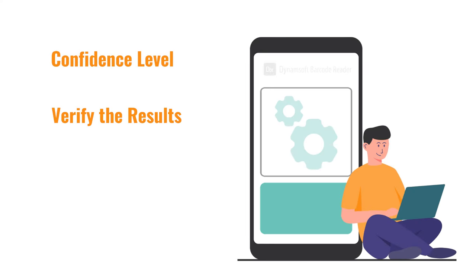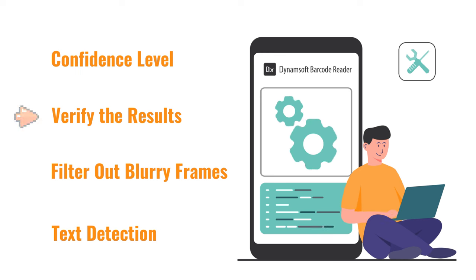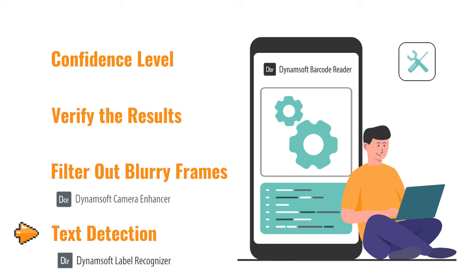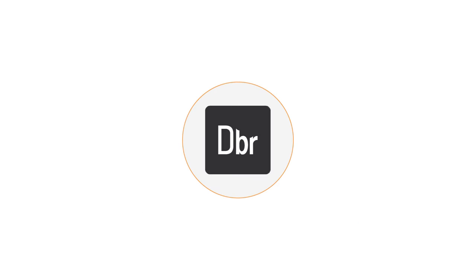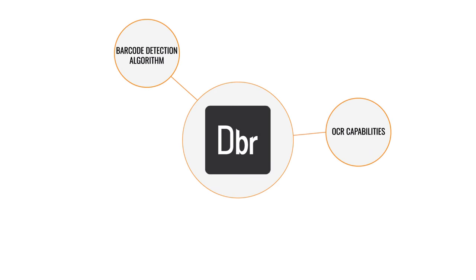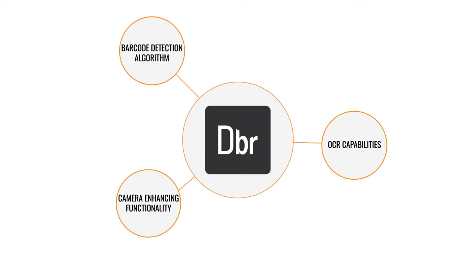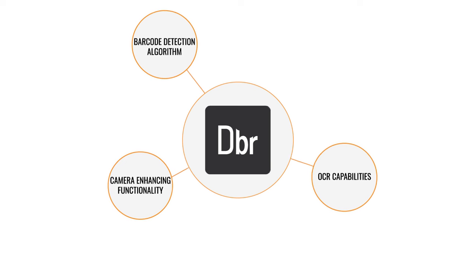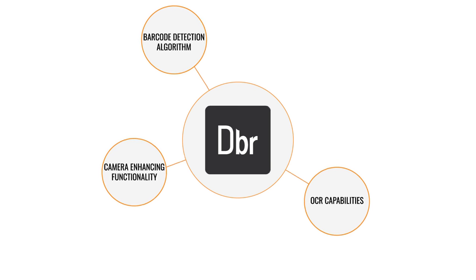There are a few other ways to improve accuracy even further: compare results in adjacent frames to filter out misreads; filter out blurry frames by utilizing Dynamsoft's Camera Enhancer module; and verify the barcode results with the accompanying text returned by the Dynamsoft Label Recognizer. With an enterprise-grade barcode detection algorithm, OCR capabilities, and camera-enhancing functionality, Dynamsoft Barcode Reader SDK is no doubt the best choice for developing an enterprise-level application.